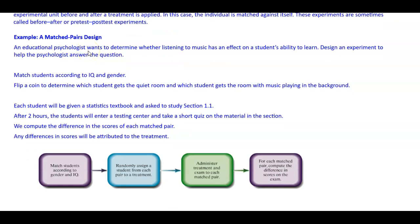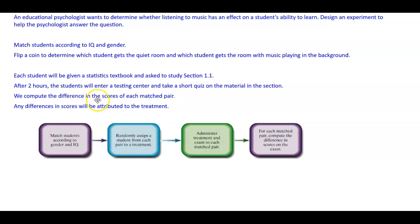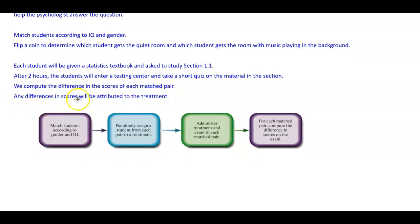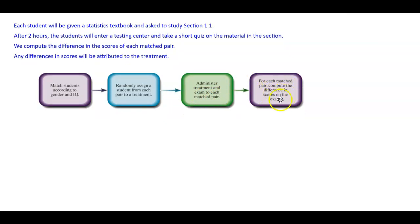Here's an example of a matched pairs design. An educational psychologist wants to determine whether listening to music has an effect on a student's ability to learn. Match students according to IQ and gender. Flip a coin to determine which student gets a quiet room and which gets a room with music playing in the background. Each student will study section 1.1 of a statistics textbook for two hours, then take a short quiz. Compute the difference in scores of each matched pair — any differences will be attributed to the treatment.